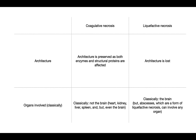Liquefactive necrosis is classically the brain, but it also includes abscesses, which can occur in any organ. In liquefactive necrosis there is enzymatic denaturation, often from inflammatory cells, and the architecture is lost — you can't tell what organ it is. Robbins says it's not understood why the brain has liquefactive necrosis, but my personal thought is that the brain has cells with a lot of neuropil between the axons and dendrites, and when the cell dies all that tissue is lost and there's nothing holding the cells together.